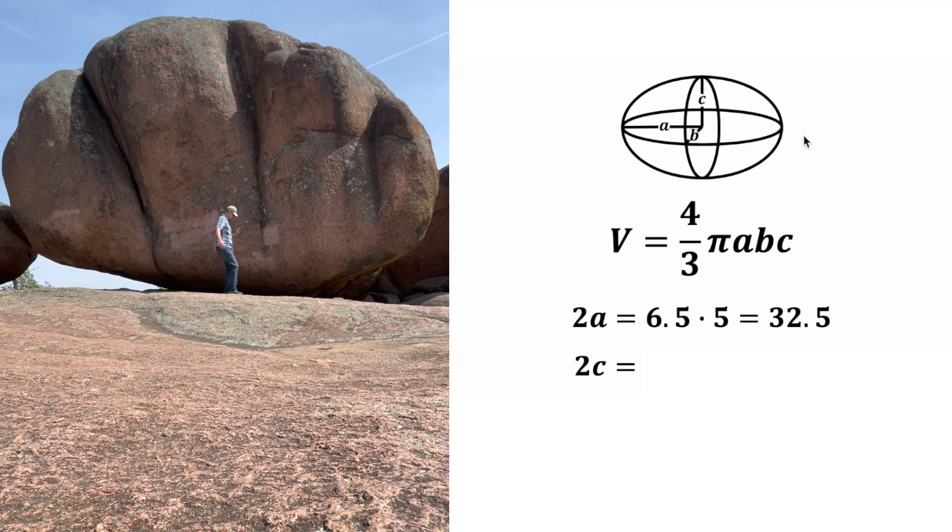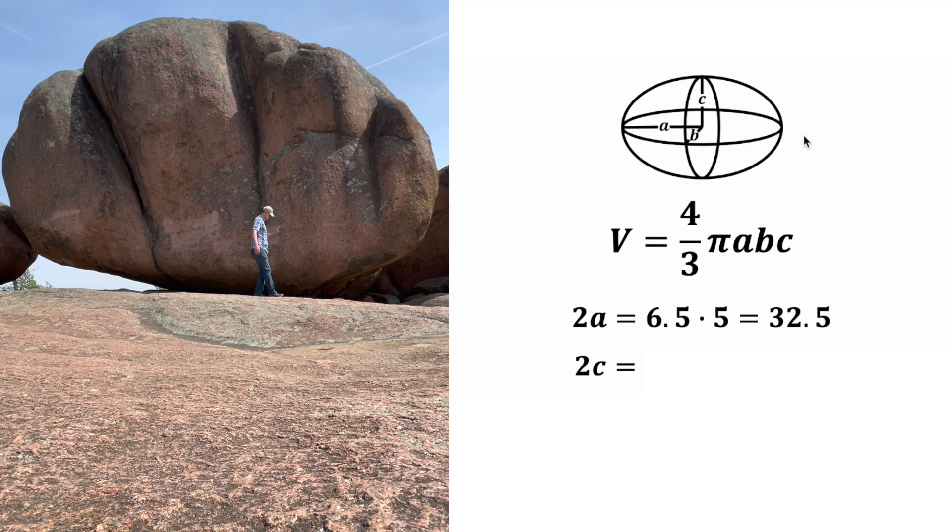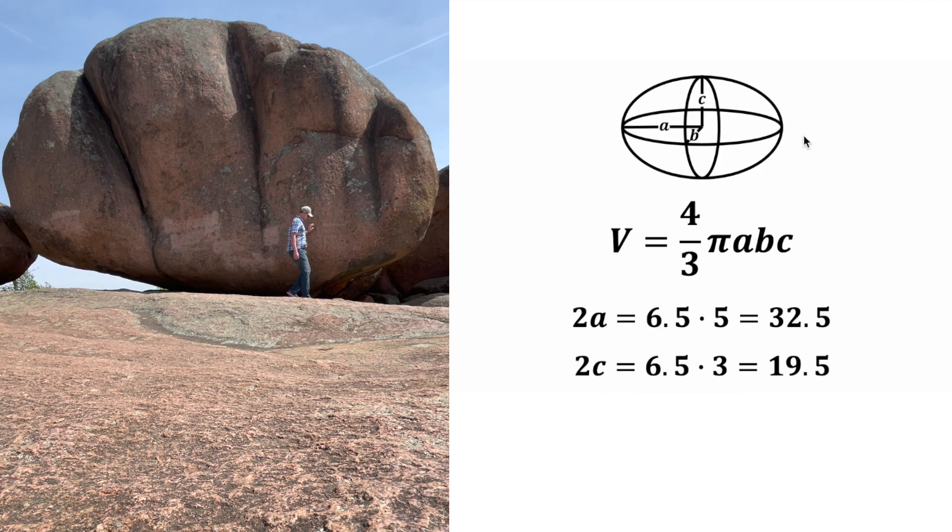And next let's do 2C. So when I stand right here, you can see that the height of the rock is one, two, three times my height. So that's going to be 6.5 times 3, and that's equal to 19.5.